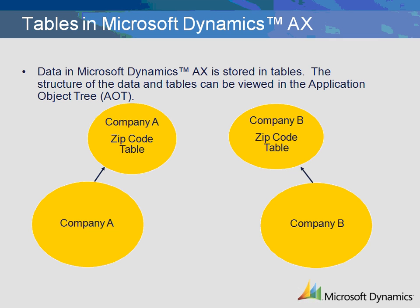Microsoft Dynamics AX data is stored in tables. The Microsoft Dynamics AX AOT, or Application Object Tree, is where the structure of the data and tables can be viewed. In the example illustrated below, Company A and Company B each have a zip code table. Whenever a zip code is viewed, edited, created, or deleted, Microsoft Dynamics AX references the respective zip code table.